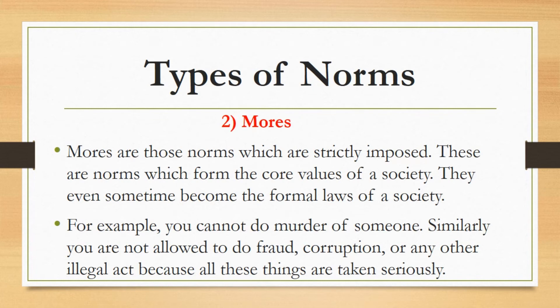The second type of norms is mores. Mores are those norms which are strictly imposed — these are the norms which form the core values of a society, and they sometimes even become the formal laws of a society. Therefore they are usually imposed strictly. For example, you cannot commit murder, and similarly you are not allowed to do fraud, corruption, or any other illegal act, because all these things are taken seriously.